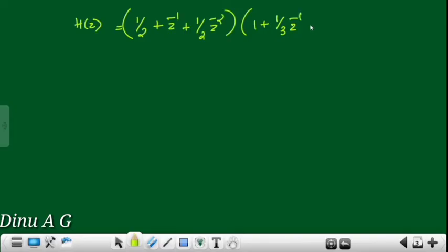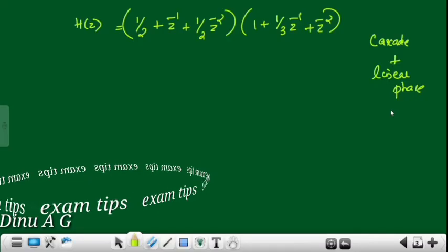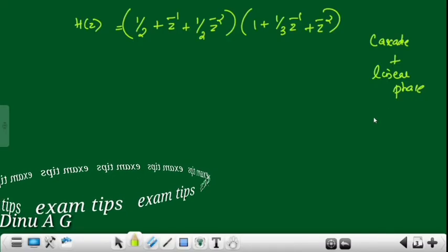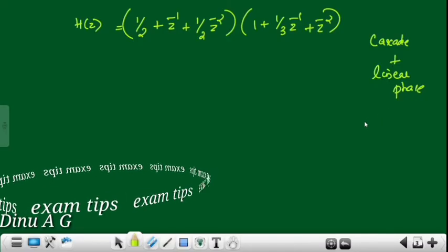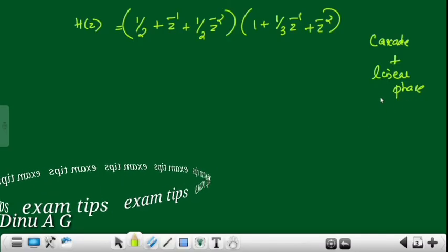The cascade form changes as: z raised to minus 1 plus z raised to minus 2. The cascade form plus linear phase structure — these types of questions are straightforward and worth 10 marks.